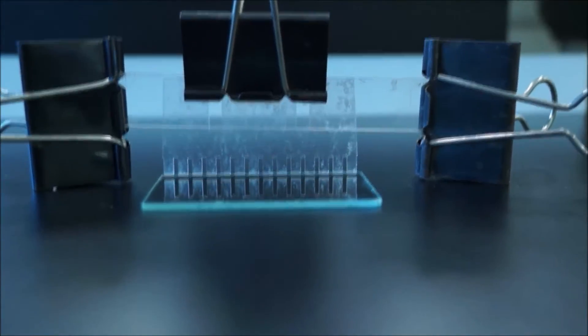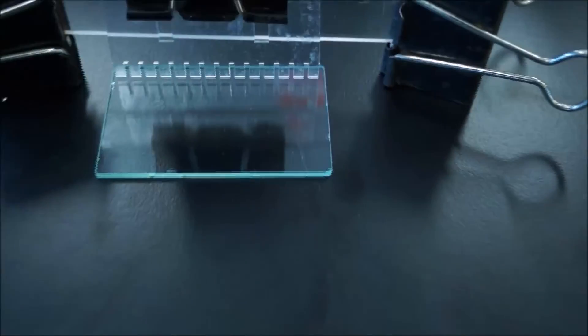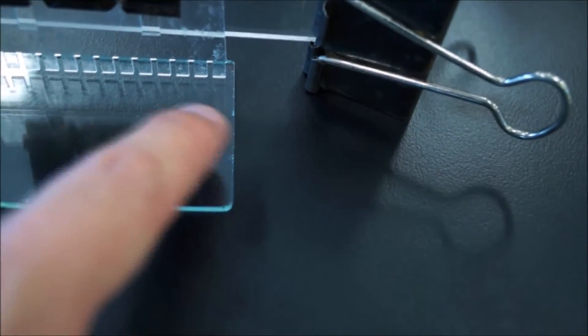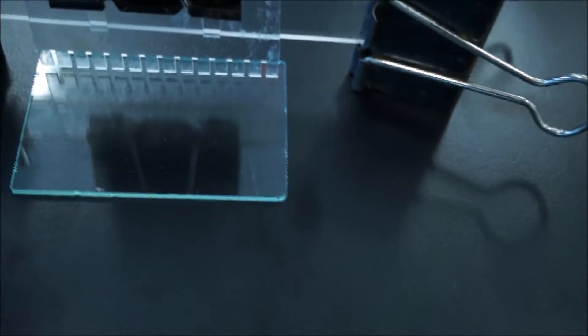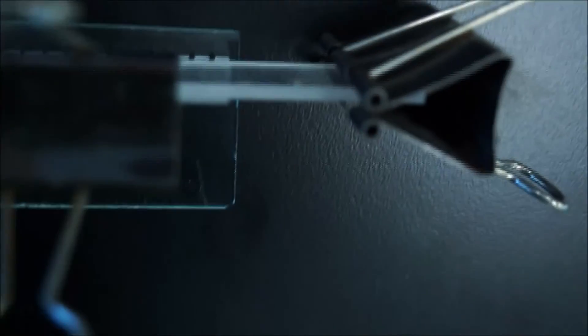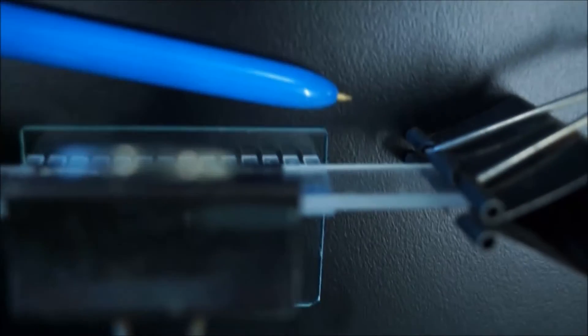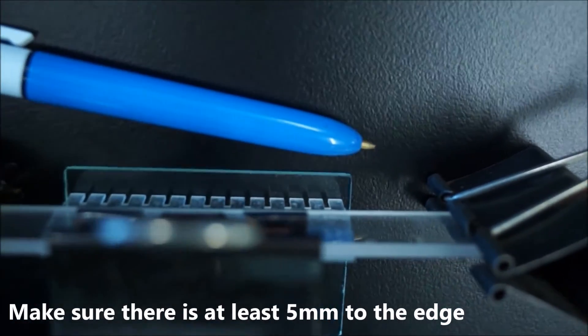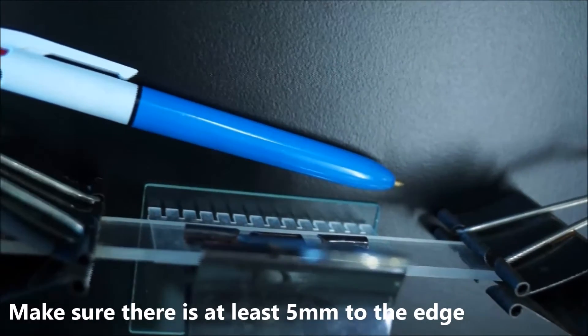The other dimension you want to be aware of is length. Make sure you put the comb along the length of the glass slide rather than the short edge, because you won't have enough space for all the wells along the short edge. And make sure it's not too close to the edge at the back. You want maybe 6 or 7 millimeters to the edge so all the wells will form up properly.